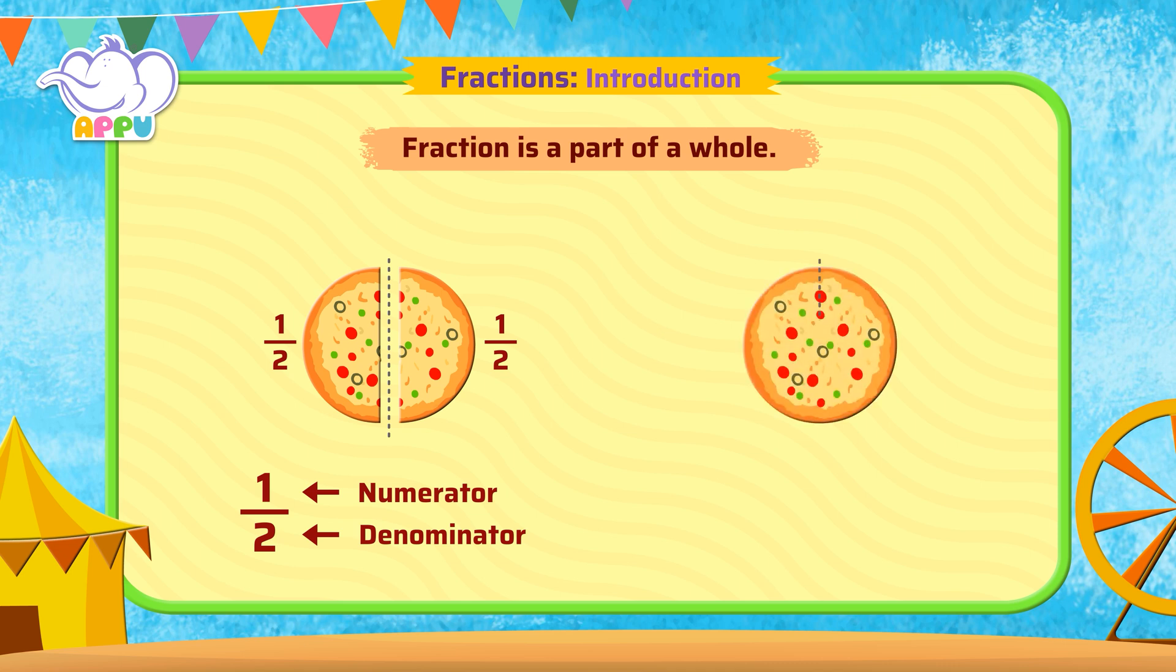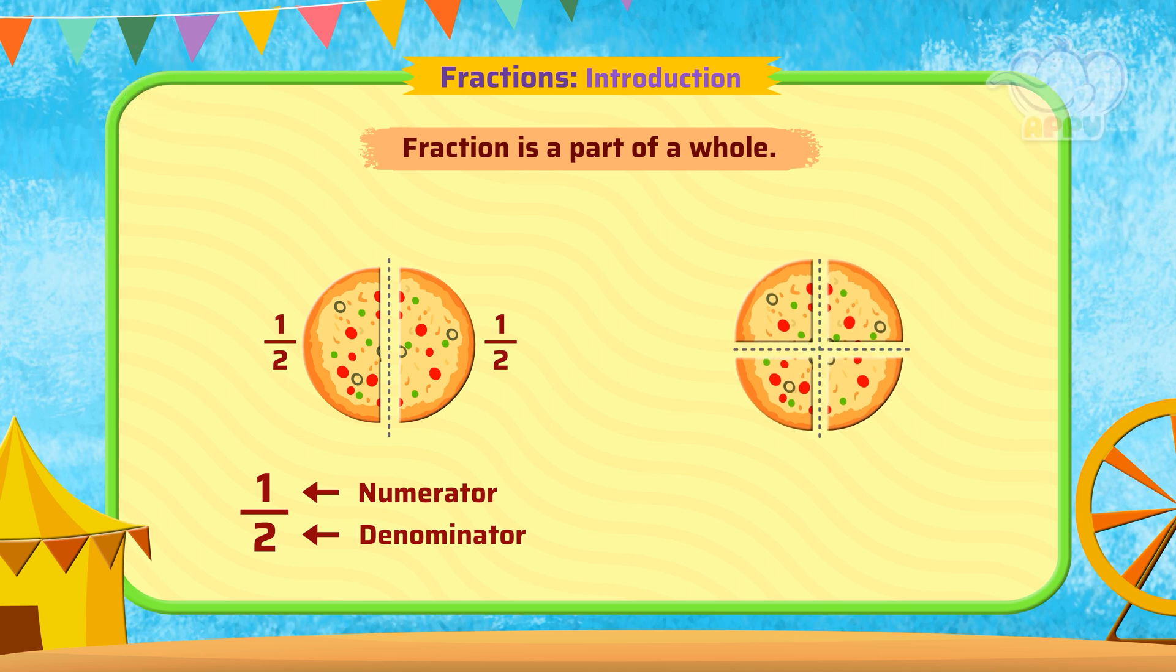Now, let's cut the pizza into four equal parts. Each part is quarter pizza, which can be written as one over four, which means one out of four slices.